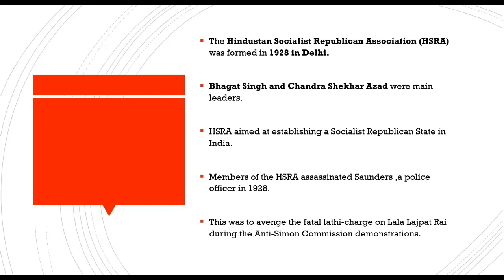Members of the HSRA assassinated Saunders, a police officer, in 1928. This was done to avenge the fatal lathi charge on Lala Lajpat Rai during the anti-Simon Commission demonstrations, due to which Lala Lajpat Rai had died. Then on 8 April 1929, Bhagat Singh and Batukeshwar Dutt threw two bombs in the Central Legislative Assembly; both were arrested and tried in the Central Assembly bomb case.